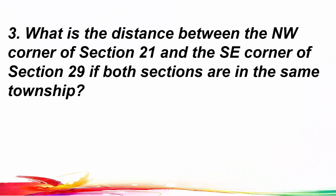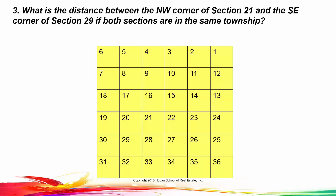Number three: what is the distance between the northwest corner of section 21 and the southeast corner of section 29 if both sections are in the same township? Here's our township. Remember, a township is 6 miles by 6 miles. We number the sections in a township starting in the upper right: 1, 2, 3, 4, 5, 6, then drop down to 7, 8, 9, 10, 11, 12, drop down to 13, and back and forth.